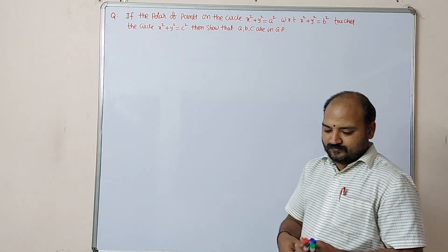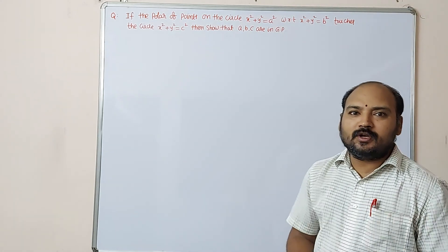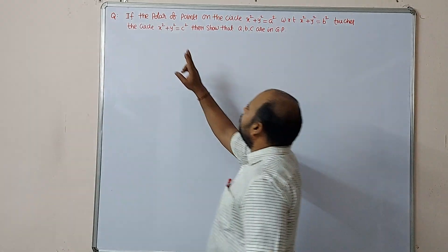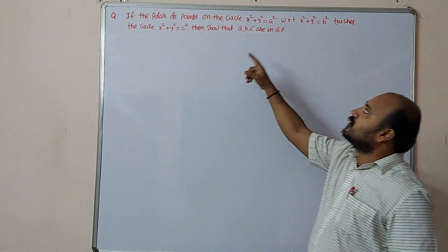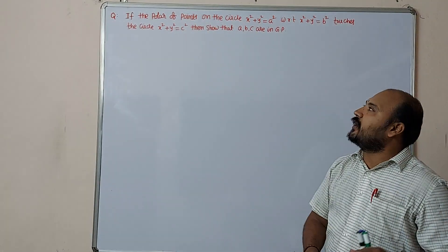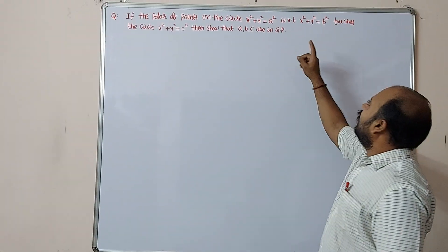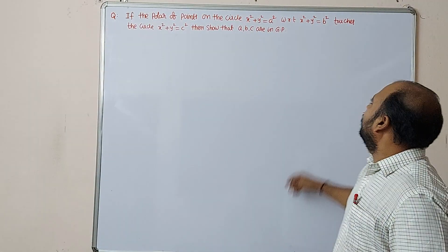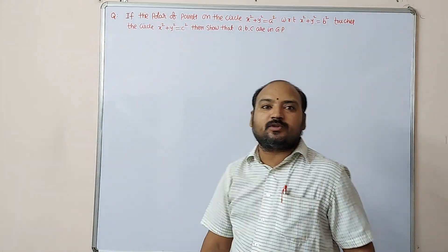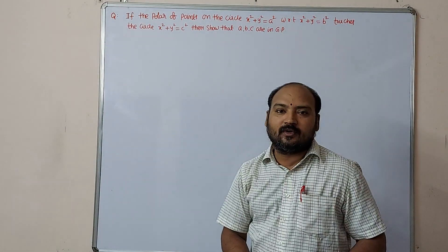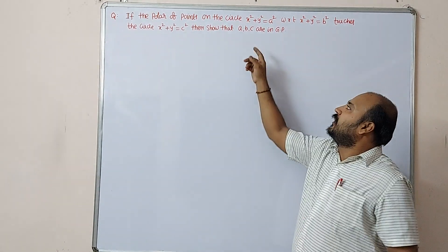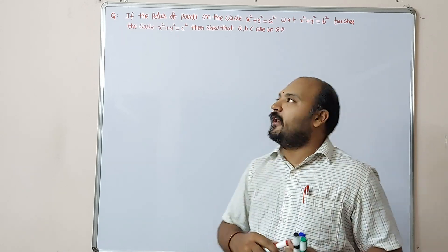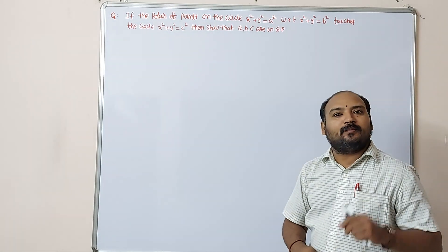Welcome to our channel. Here is one more important question from circles: if the polar of points on the circle x² + y² = a² with respect to x² + y² = b² touches the circle x² + y² = c², then show that a, b, c are in geometrical progression.